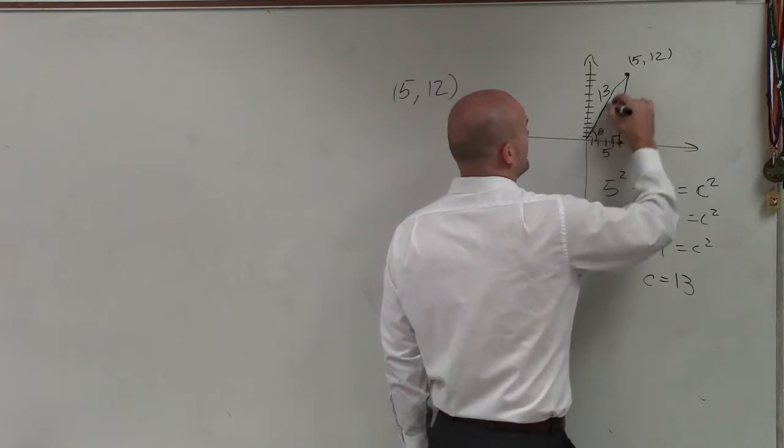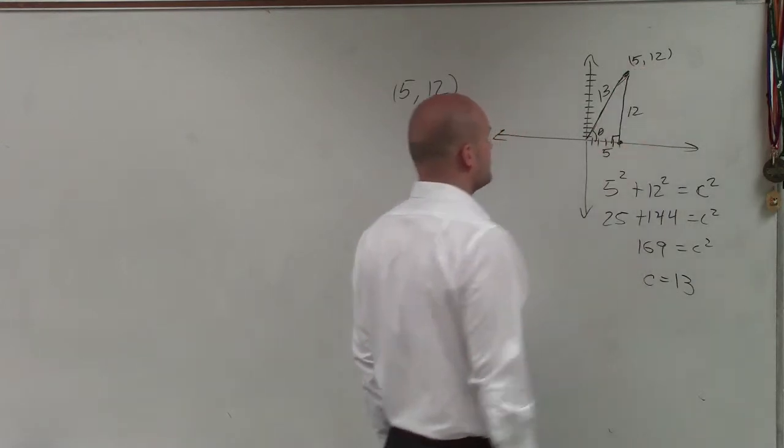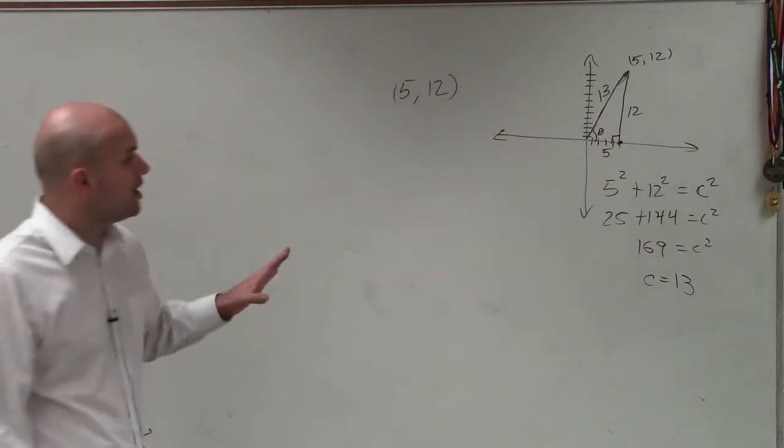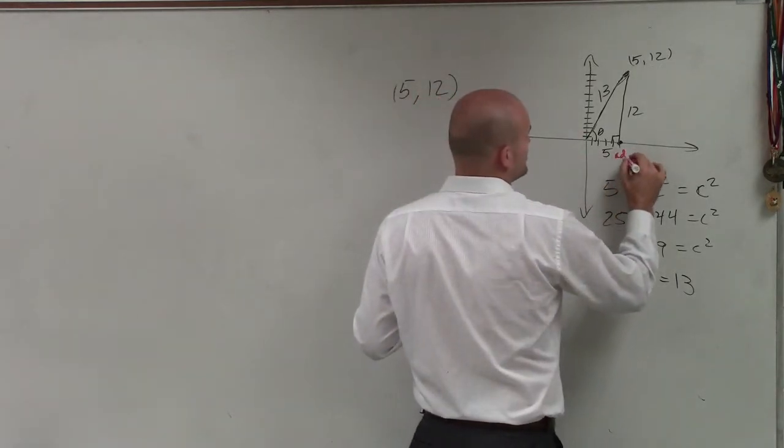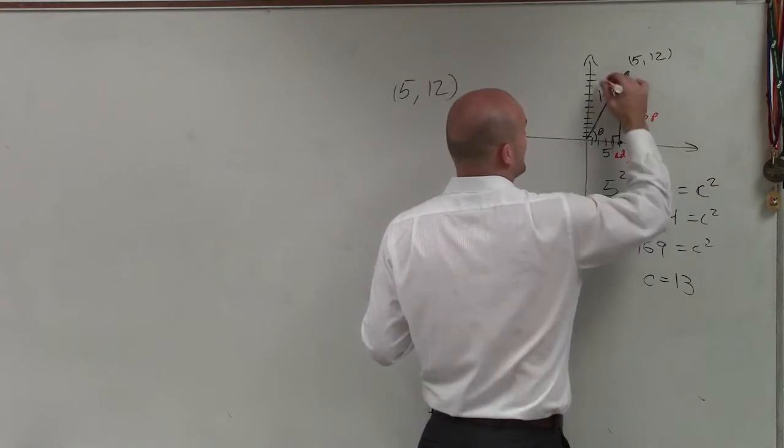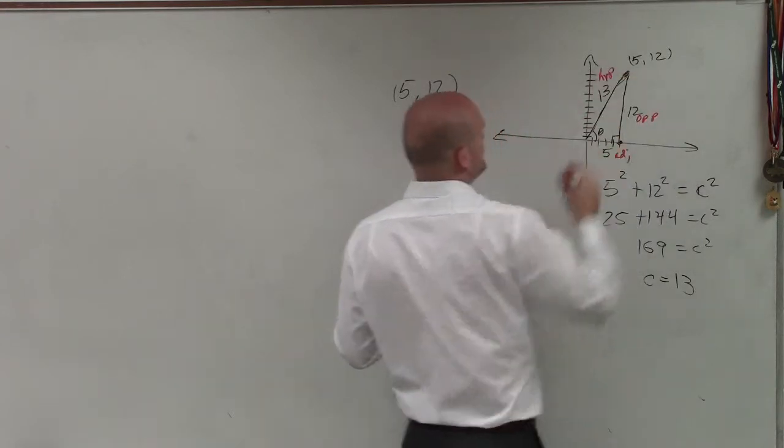And that's a horrible hypotenuse. But anyways, you get the point. So now I have a triangle where my adjacent side, because here's my angle theta. So this is the adjacent side, this will be the opposite side, and this is what we call the hypotenuse.